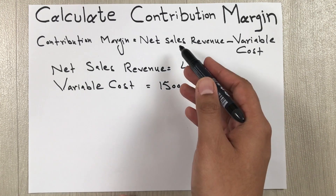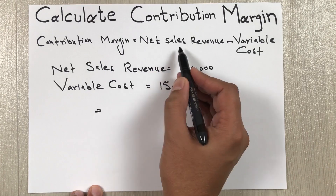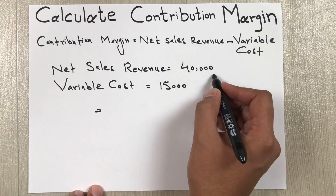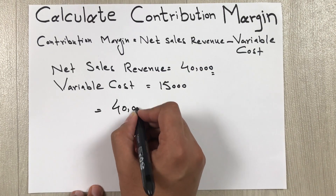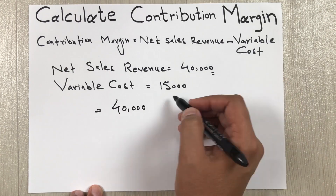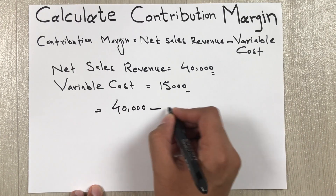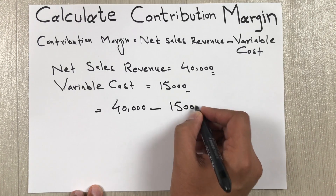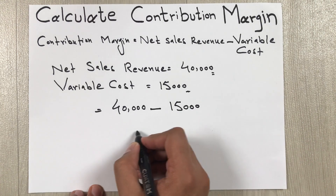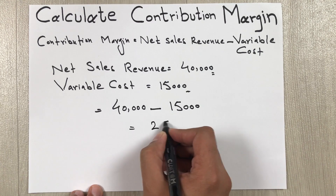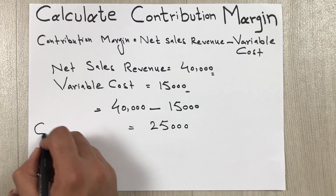We simply put these values into the formula. Net sales revenue is forty thousand, so we put forty thousand minus variable cost, which is fifteen thousand. So our contribution margin is twenty-five thousand.